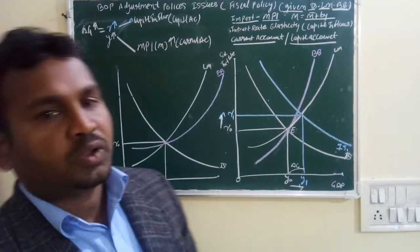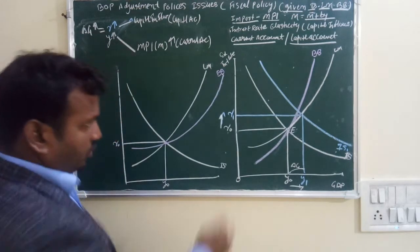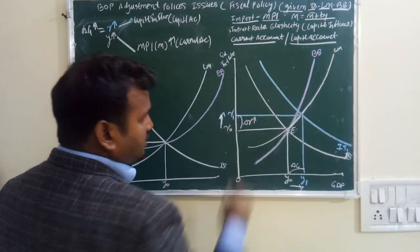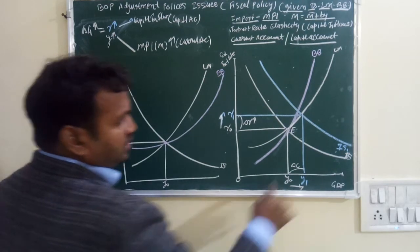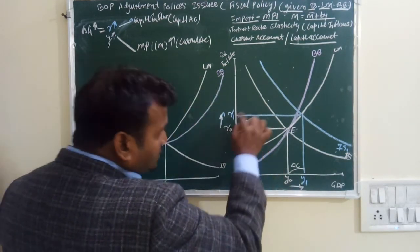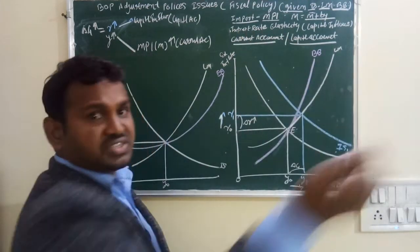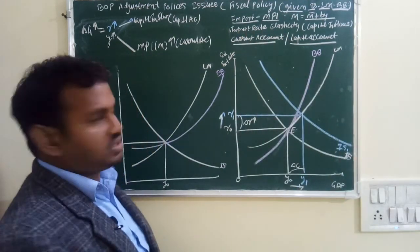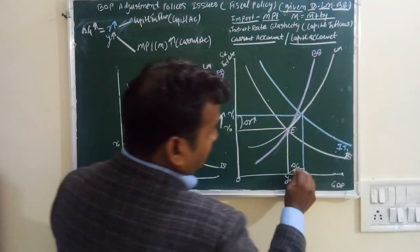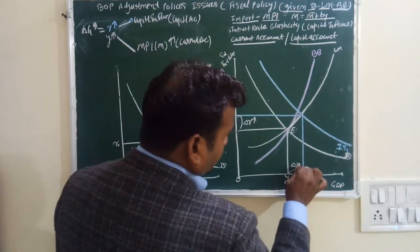How much GDP changes depends on the government multiplier, which you already know. The change in interest rate depends on the change in G, and how many times the interest rate responds is the interest elasticity. How many times investment changes relative to the change in G determines the change in Y.